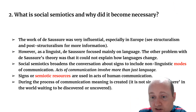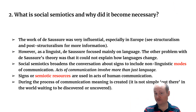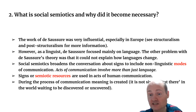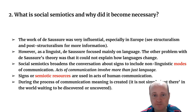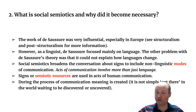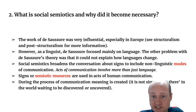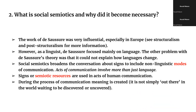De Saussure was a linguist, so while he knew signs were used outside language, he focused on the signifier as a linguistic phenomenon. Social semiotics attempts to move beyond this to look at non-language-based signs. Another problem with de Saussure's work was that it couldn't explain how language changes over time — and this is something social semiotics attempts to address.